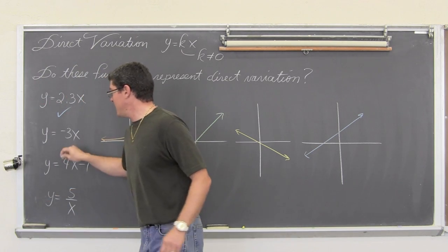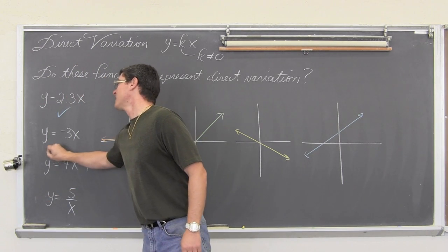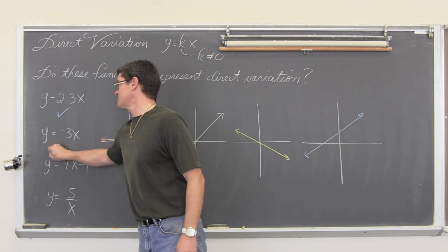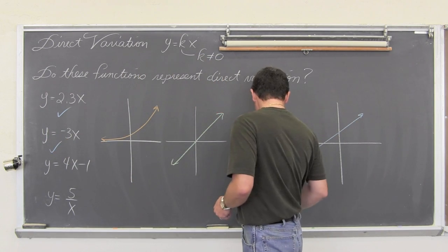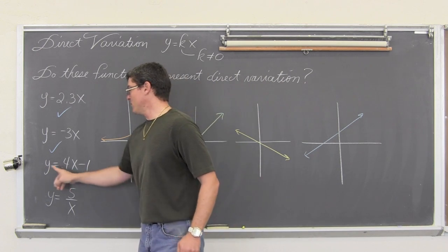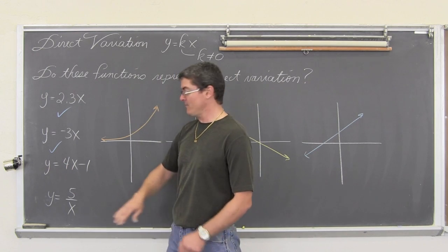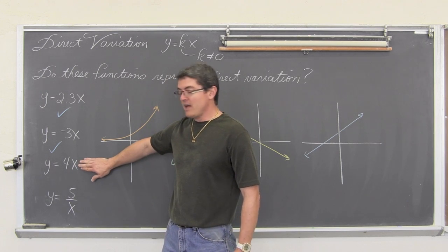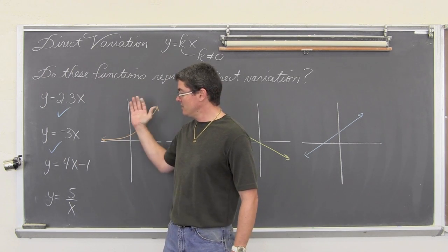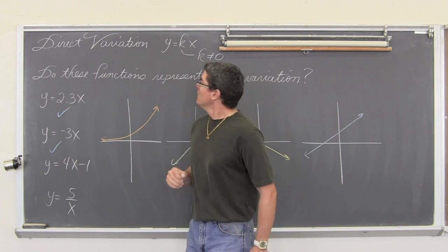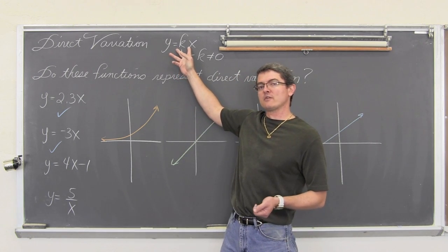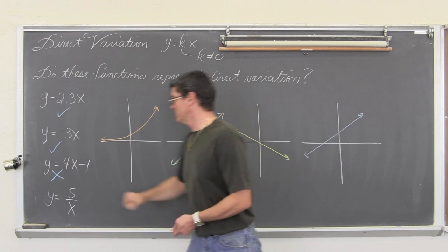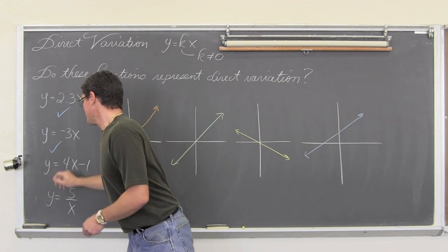So, we have y equals negative 3x. That is in the format of y equals k times x. So, that is direct variation as well. Now, here we have y equals 4x minus 1. If I were to take out the minus 1, that would be direct variation. But, with the subtraction of a constant, which is not part of our formula for direct variation, means this is not. Whoops, I had to pick a different color there. So, that is not.